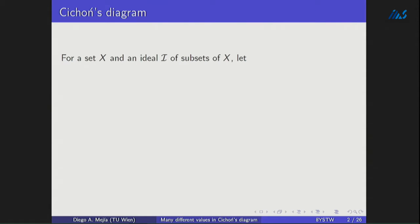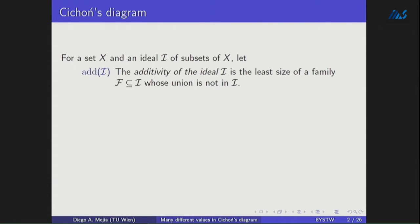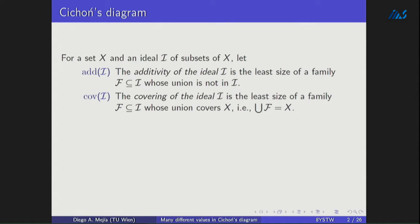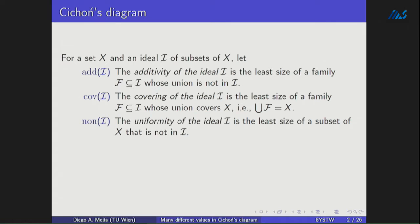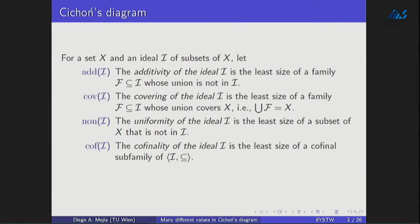In general, if you have a set X and an ideal I of subsets of X, you can define the additivity of I, which is the least size of a family of objects in the ideal whose union is not in the ideal. You can define the covering, which is the least size of a family of objects of the ideal that covers the space X. The uniformity of the ideal, which is the least size of a subset of X which is not in the ideal. And finally, the cofinality of the ideal, which is the least size of a cofinal family of the ideal with respect to the subset relation.